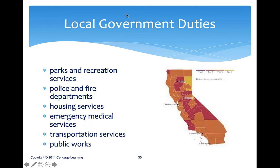Local government duties include parks and recreation, police and fire protection. Local government provides police and fire services and runs parks and recreational programs, which are vital for young people and community activity. They also engage in housing services, emergency medical services — for example, the City of San Diego contracts with an ambulance company — and transportation such as buses and trolleys.